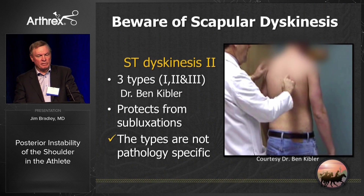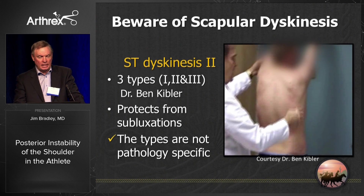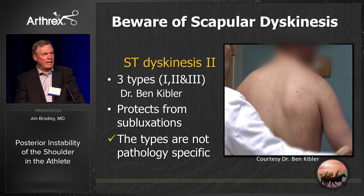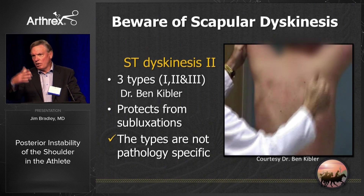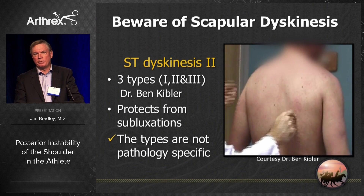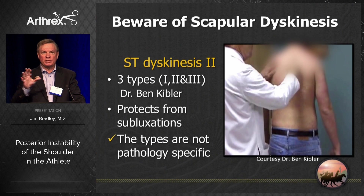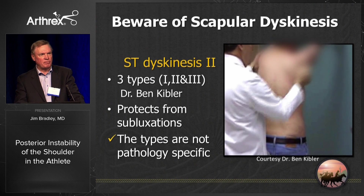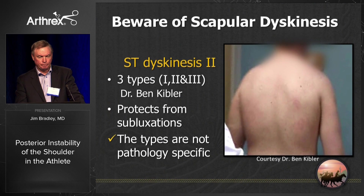The next thing is to beware of scapular dyskinesis — Ben Kibler is the champion of this. I have patients come in whose primary complaint is scapular winging, and it turns out they have posterior instability. What they're doing is protecting their shoulder from going out the back by moving their scapula to block it. Be careful in young people presenting this way — they may actually have posterior instability of the shoulder.